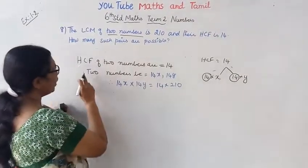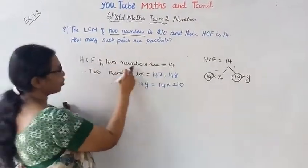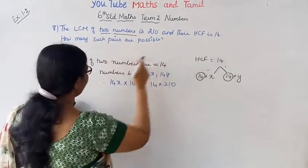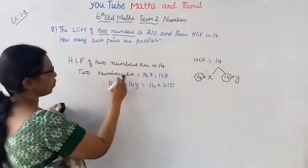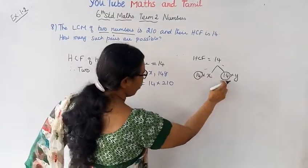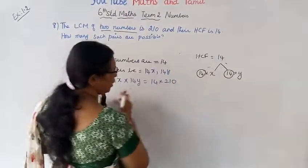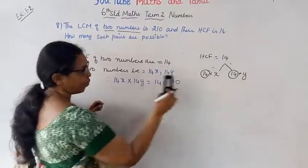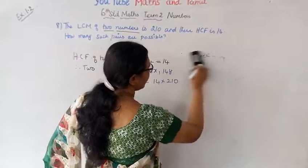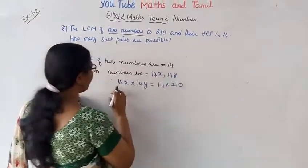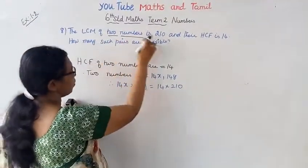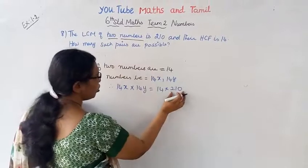Now, HCF of 2 numbers is 14. Since HCF is 14, we can write the 2 numbers as 14x and 14y. The LCM of 2 numbers is 210.